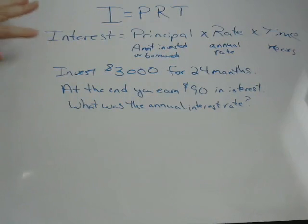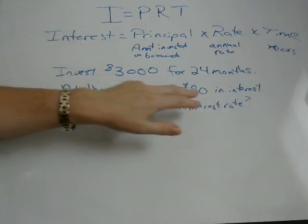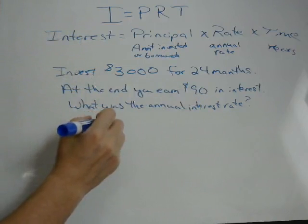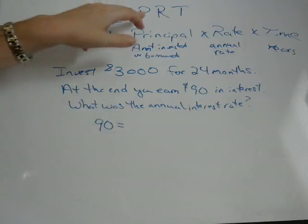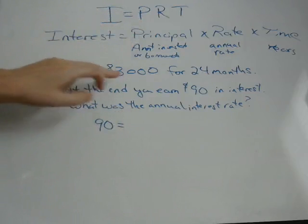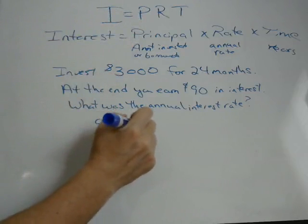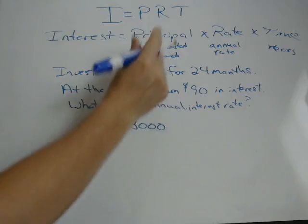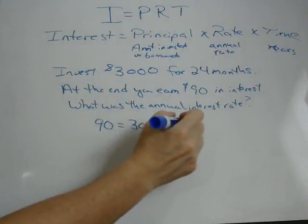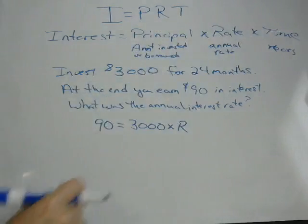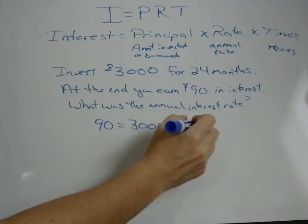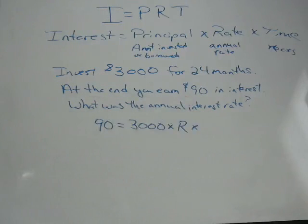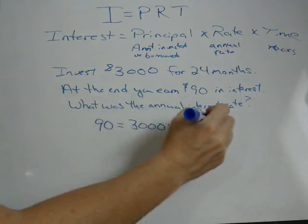We set the problem up the same way — just plug in what you know. Interest is $90, so 90 equals principal, which is $3,000, times rate (which we don't know) times time. Again, time has to be in years, not months. 24 months divided by 12 equals 2 years.